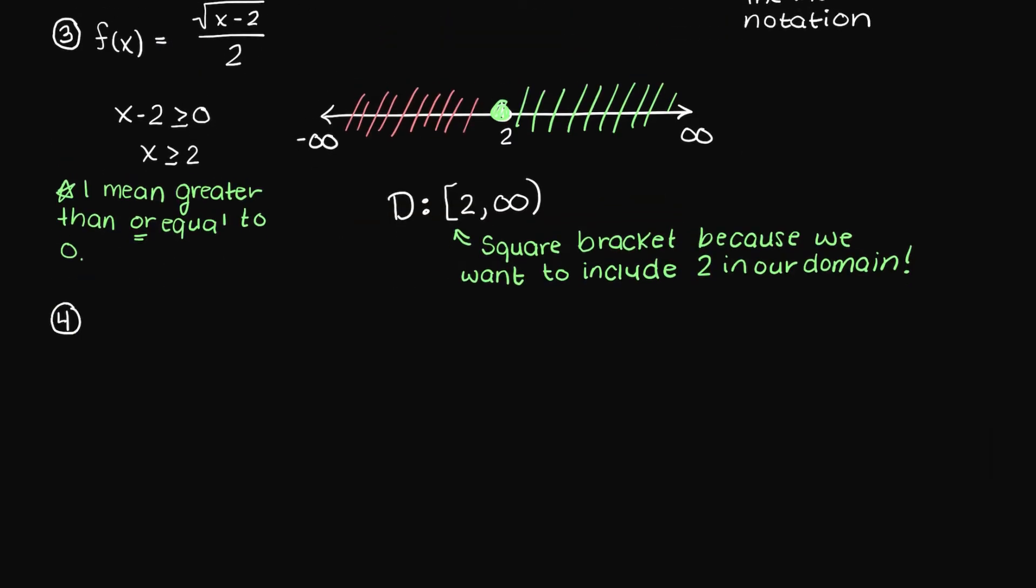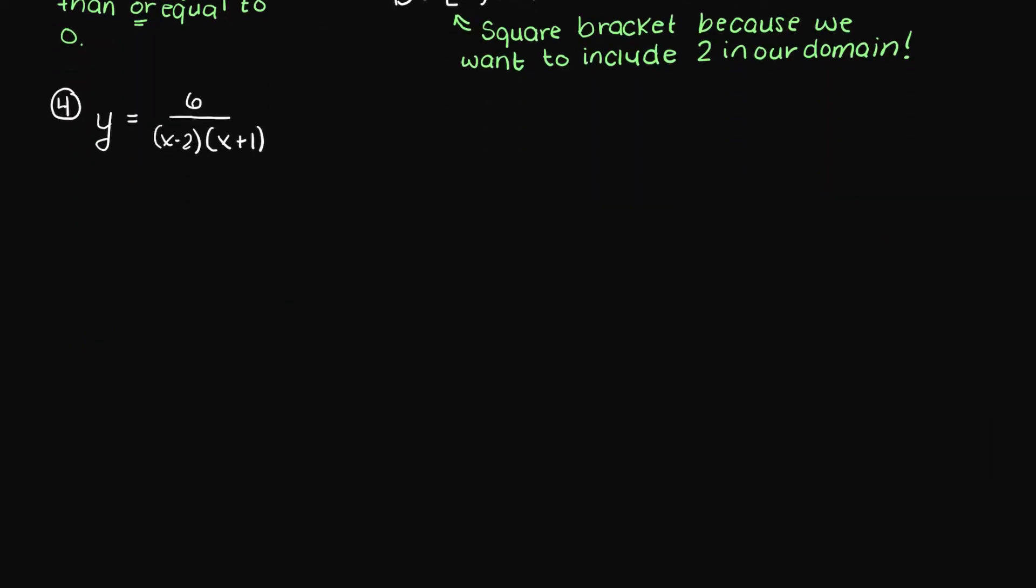The fourth question states 6 over x minus 2 multiplied by x plus 1. Since either of these denominators being 0 will result in an undefined output, we need to find the two points at which this denominator will be 0. So using the two inequalities, we can see if our output x equals positive 2 or negative 1, our output will be undefined. This can be seen on our number line as we have two holes.